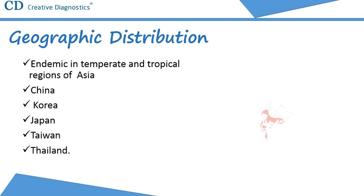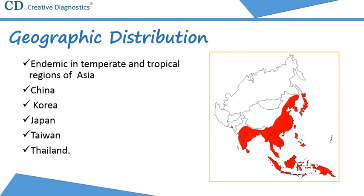Other countries that still have periodic epidemics include Vietnam, Cambodia, Myanmar, India, Nepal, and Malaysia.